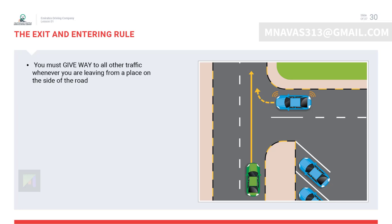The exit and entering rule: you should give way to vehicles on the major road while joining from a minor road, parking lots, fuel stations, or hard shoulder.